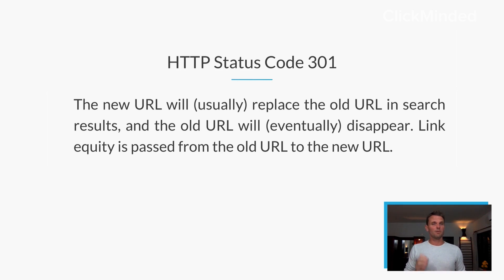Critically, and almost most importantly, link equity from the old URL is generally passed. Any time you're doing a new URL, any time you're doing a site migration, any time you're killing an old page and replacing it with a new page, you usually want to be doing a 301 redirect. The 301 redirect is the redirect of choice for SEOs. You usually want to be implementing this, not a 302 redirect, which we also have a video on.